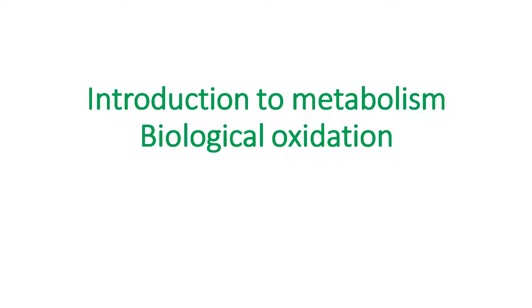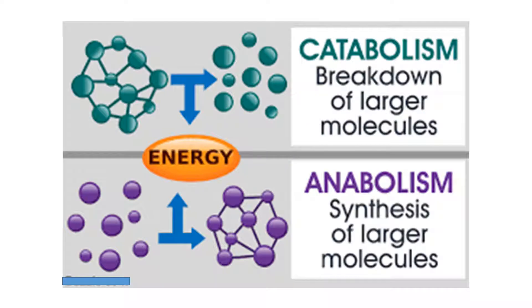Introduction to metabolism and biological oxidation. Metabolism consists of two processes: catabolism and anabolism. Catabolism is the breakdown of larger molecules to smaller ones, to monomers, or to some metabolites. Anabolism is the synthesis of larger molecules from monomers or from some metabolites. Together, these two processes constitute metabolism.